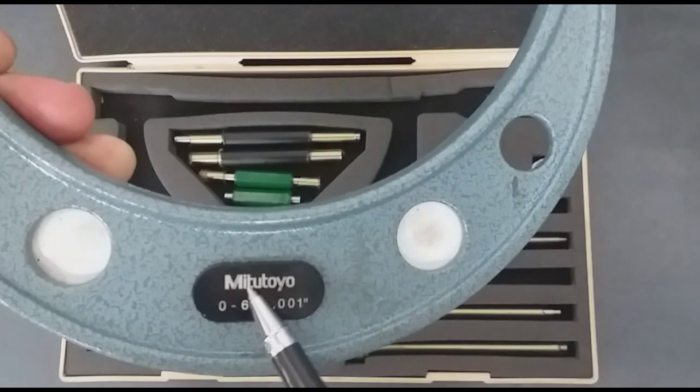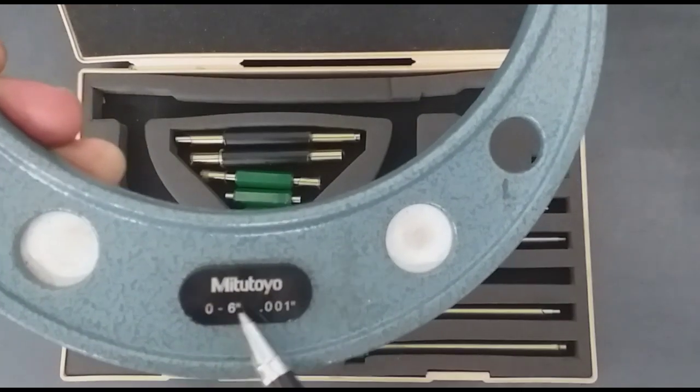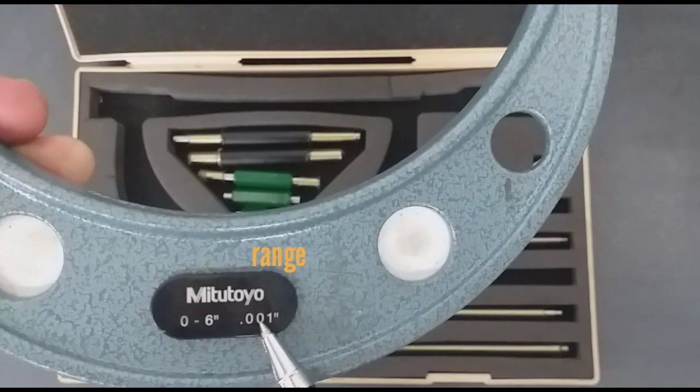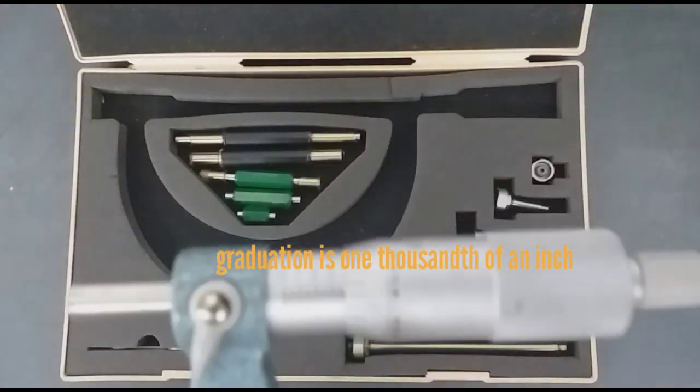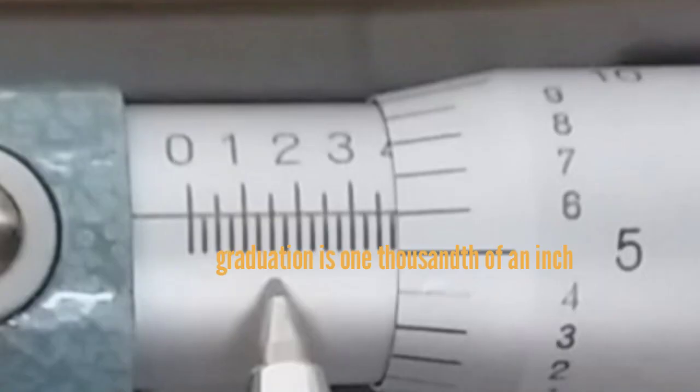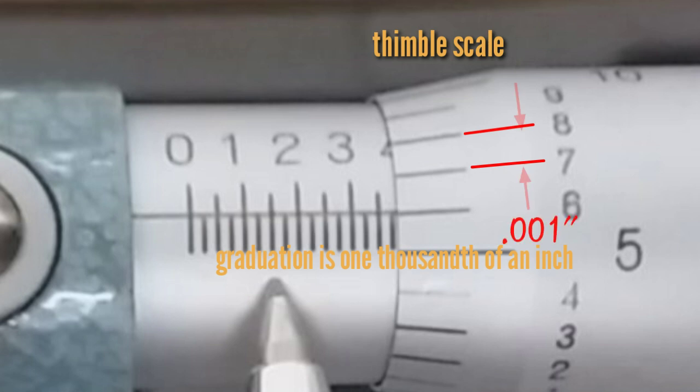We are using a 0 to 6 inch range, and the graduation is one thousandth of an inch. That is the spacing of the thimble, the graduation space is one thousandth of an inch.